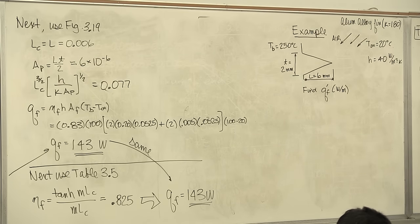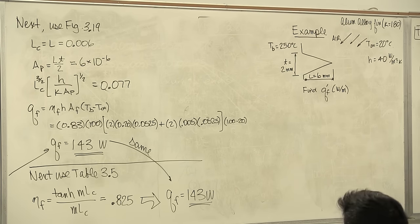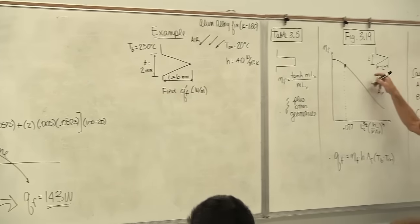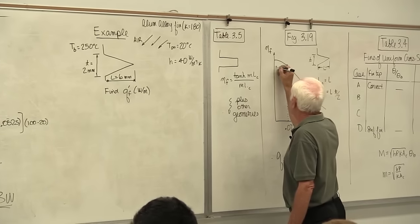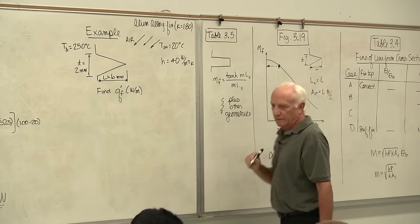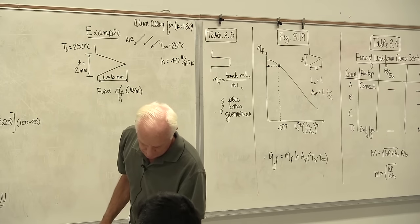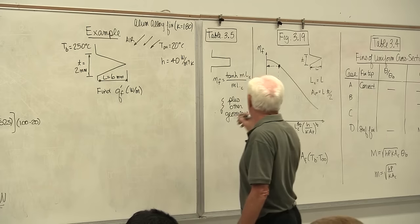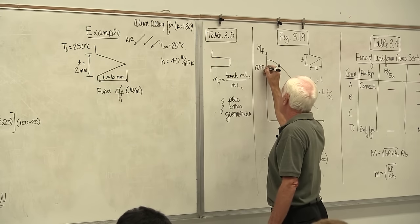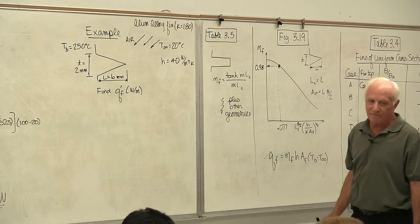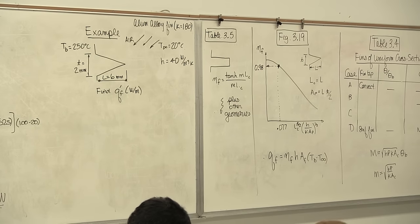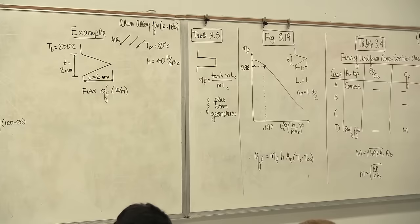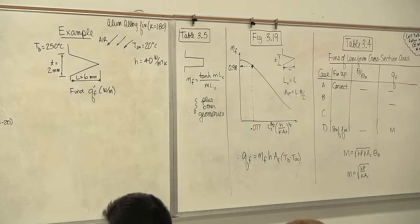Going to the graph with x-axis parameter 0.77, reading up vertically to the triangular fin line, then across horizontally, the fin efficiency is between 0.97 and 0.98 — I use 0.98. It's definitely not 0.95 and not 1.0.